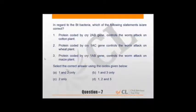Regarding BT bacteria, which statements are correct? Protein coded by Cry2AB gene controls worm attack on cotton plant - correct. Protein coded by Cry1AC - it's again on cotton plant, not wheat plant, so this is wrong. Protein coded by Cry1AB gene controls worm attack on maize plant - correct. Very factual - such questions most people don't know, you can skip. If you know that second is wrong, you have only one option. You need not know all three statements.